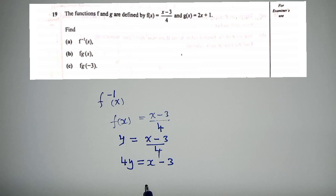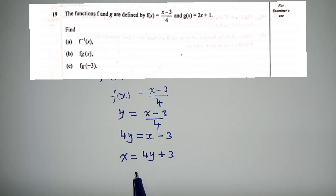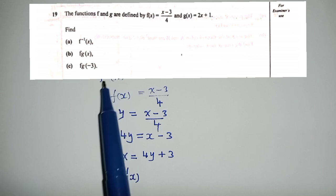Now we group the like terms. This 3 will cross the equal sign and be plus 3, so it will be x = 4y + 3. The next thing will just be to change things.